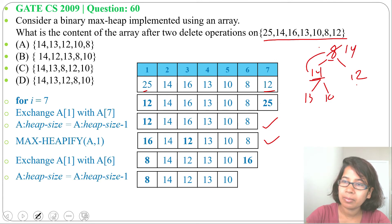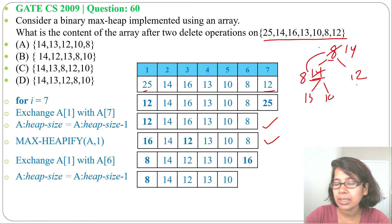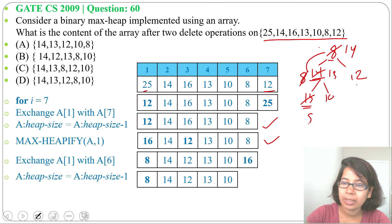So 14 will come as root, 8 will come here. Next again we need to maxify. So which one is the largest? 13 is the largest, we'll swap 13 with 8. So 13 will come here and 8 will come here.